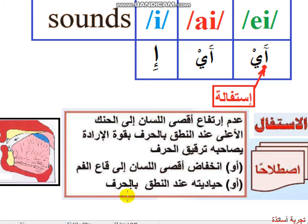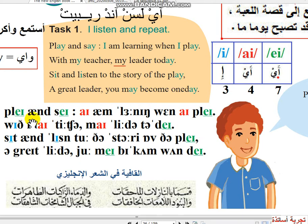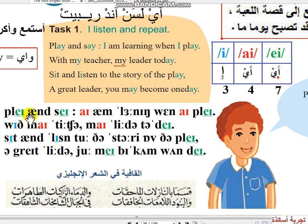سنتدرب على هذه الأصوات. لاحظ الفونيتيك هنا — الأصوات الثلاثة بالألوان: الأزرق هو E، والأحمر I، والأخضر A. تابع معي — Play, Say, Today, Play, One Day, May — نقرأ الأصوات التي فيها A.